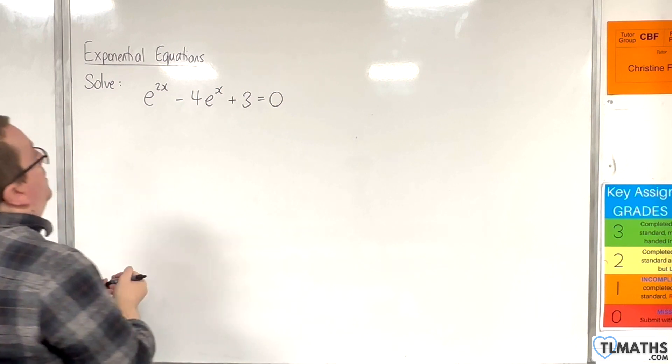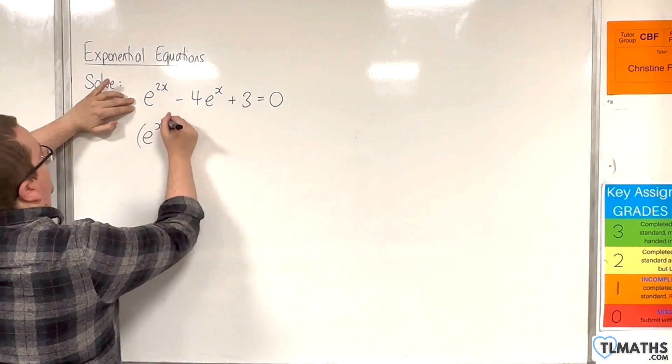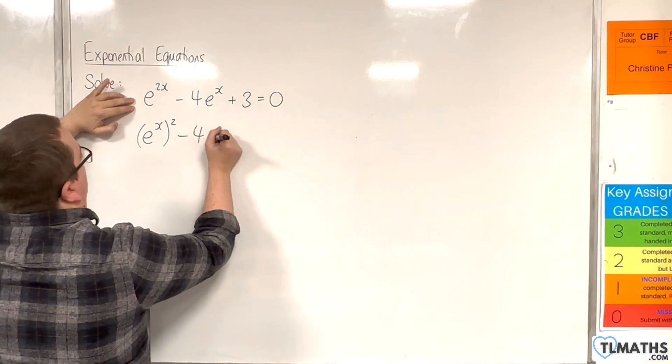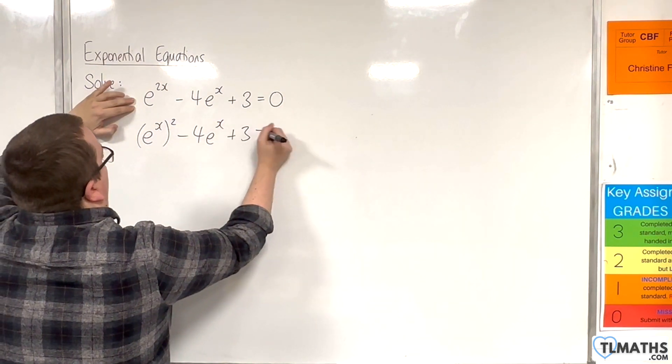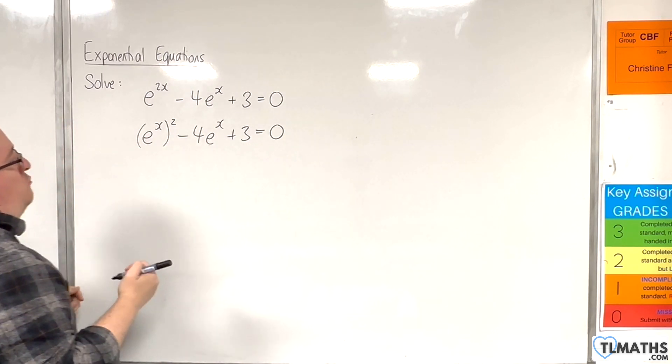The first thing to spot is that the e to the 2x can be written as e to the x squared. So now we've got something squared take away 4 lots of something plus 3 equals 0.